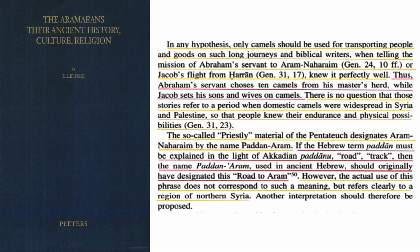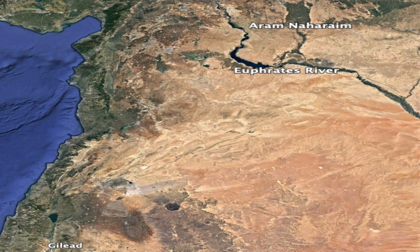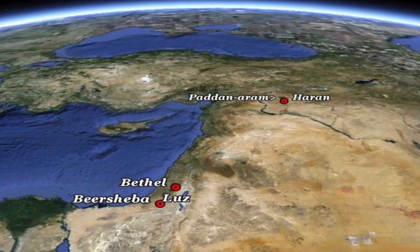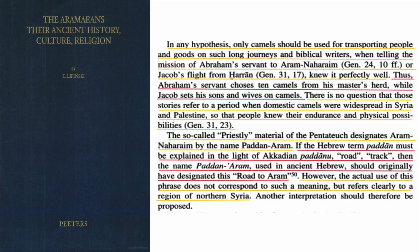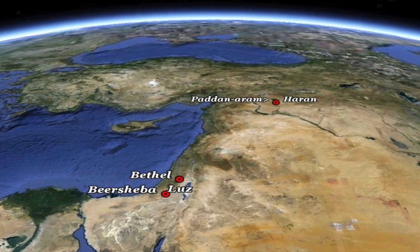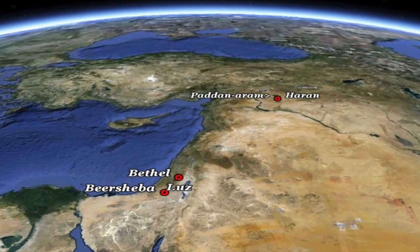The so-called priestly material of the Pentateuch designates Aram Nahorim by the name Padam Aram. The Hebrew term Padam must be explained in light of Akkadian Padamu, meaning 'road' or 'track.' However, the actual use of this phrase refers clearly to a region of northern Syria. So Aram Nahorim, or Padam Aram, is basically located in modern-day Syria.